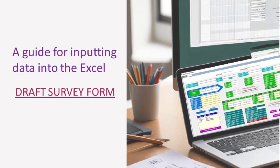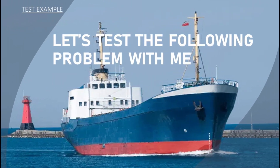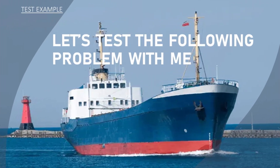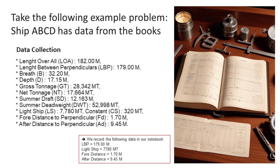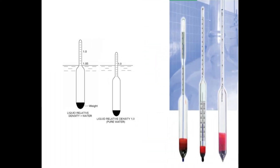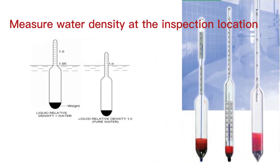A guide for inputting data into the Excel Draft Survey Form: Let's test the following problem. Ship ABCD has data from the books, collected as a record. Record the following data in a notebook: Light Ship, fore distance, aft distance. Measure water density at the inspection location.